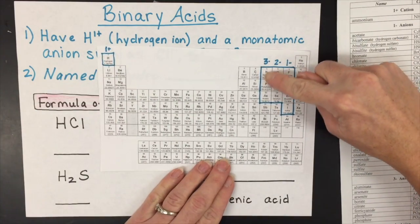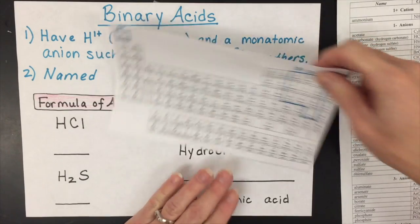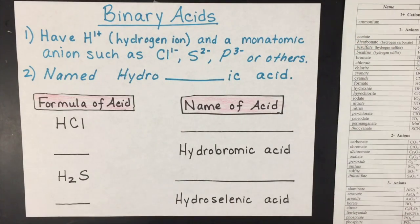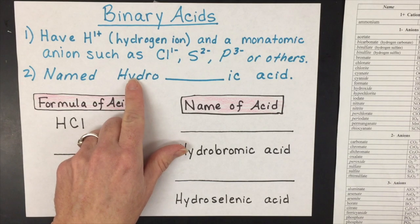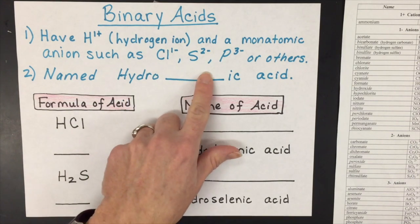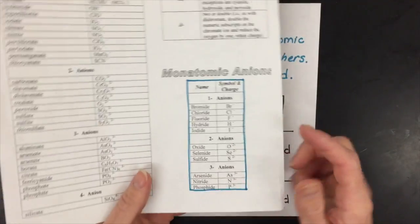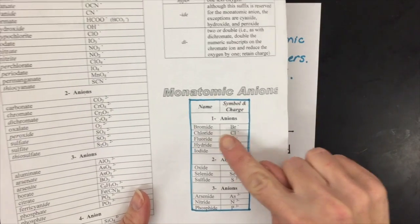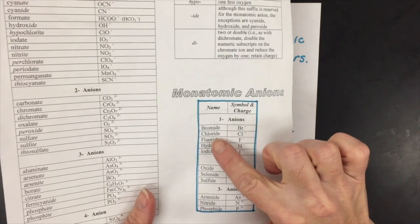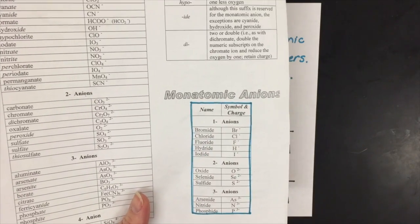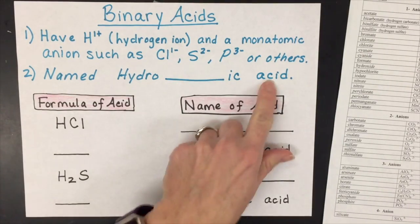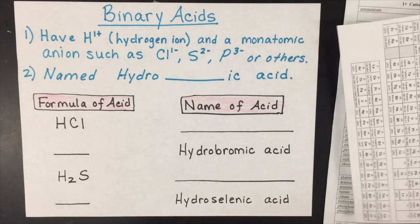The hydrogen ion has a one plus charge, and the predicted charges are based off of the group. The other way you know you have a binary acid is that in the name it'll start with the prefix hydro. Then in this position will be one of these nonmetal names. So bromide will turn into bromic, chloride will turn into chloric, fluoride will turn into fluoric, etc., and then after that word they'll have the word acid.